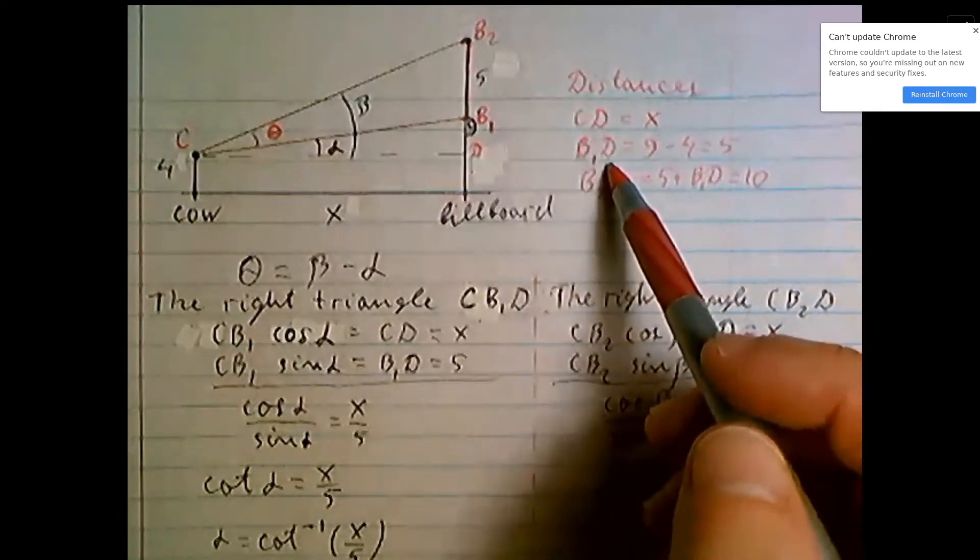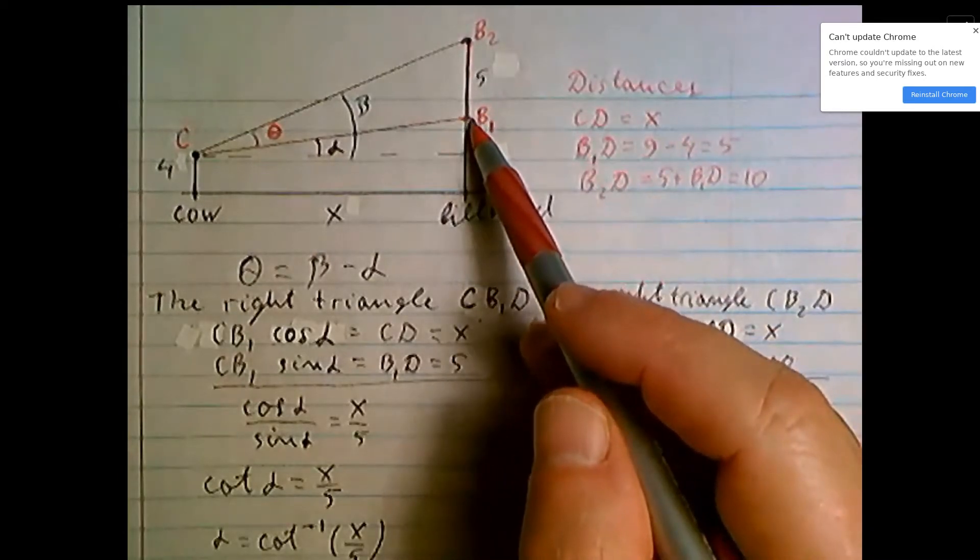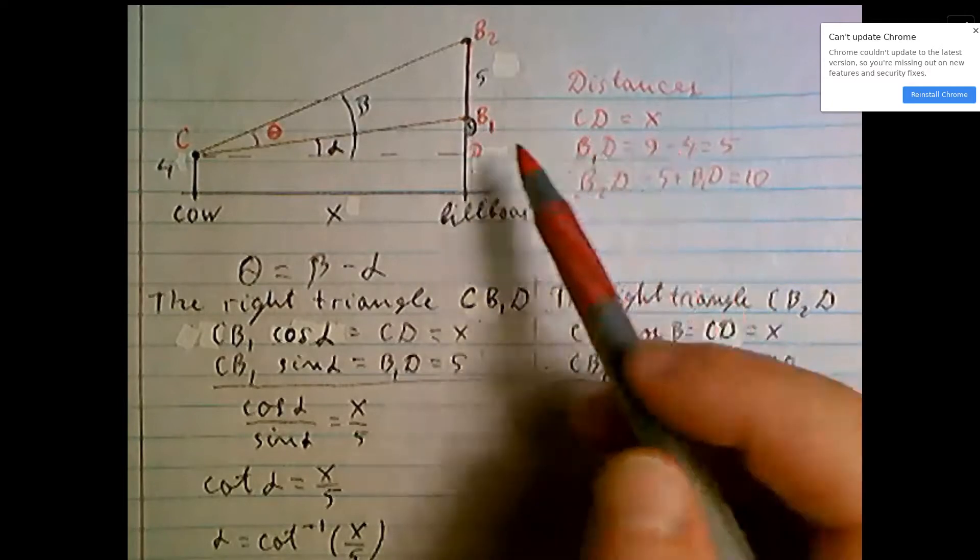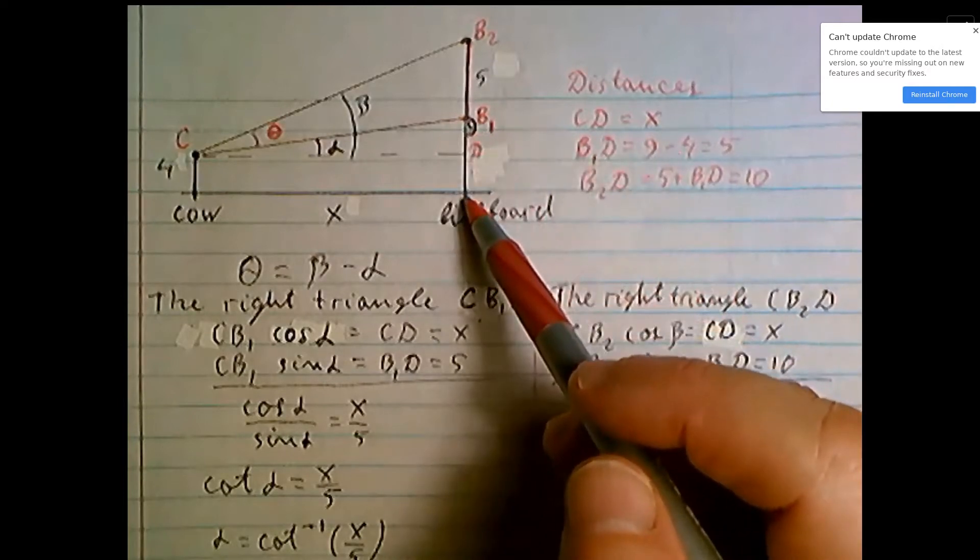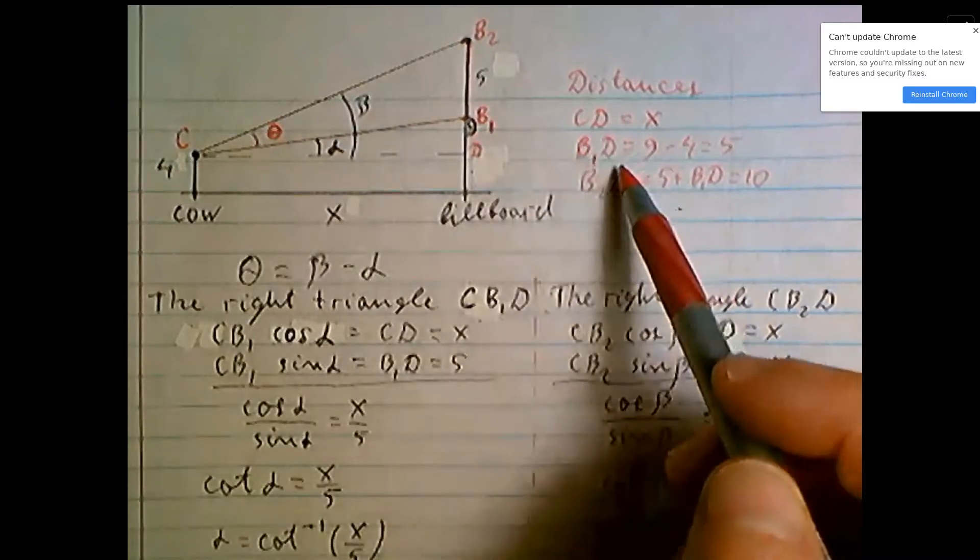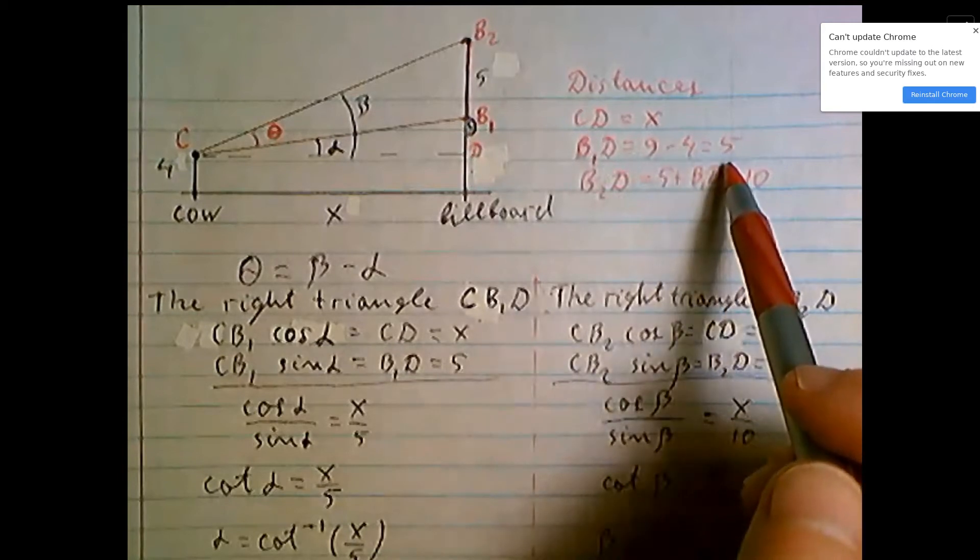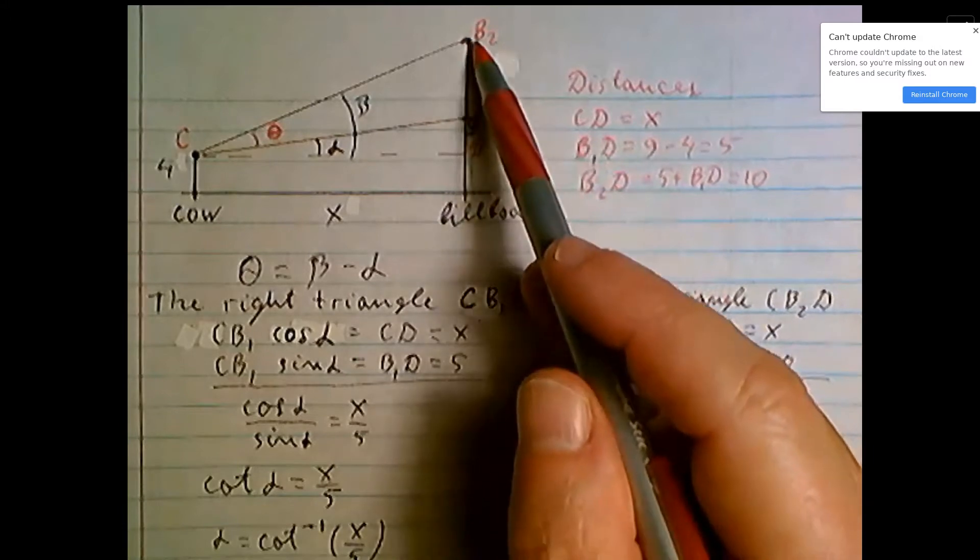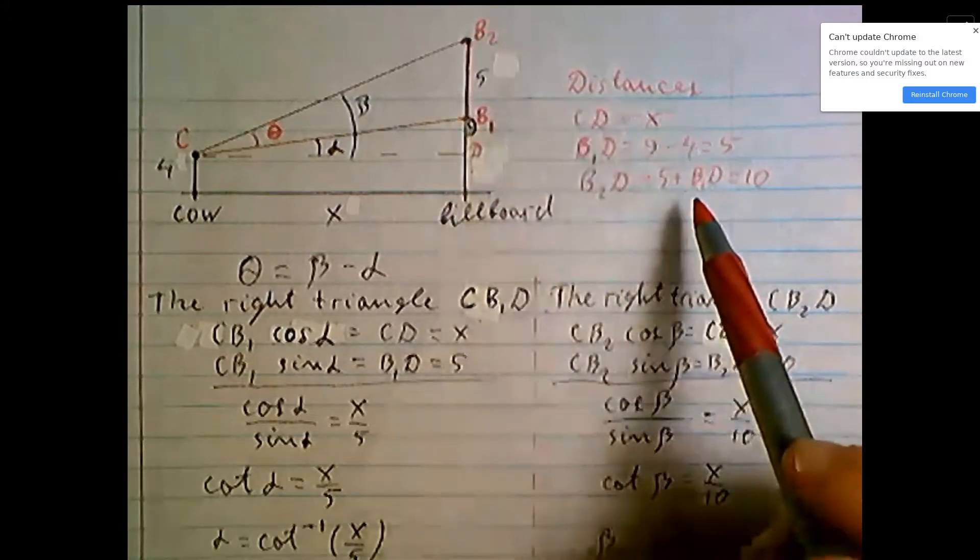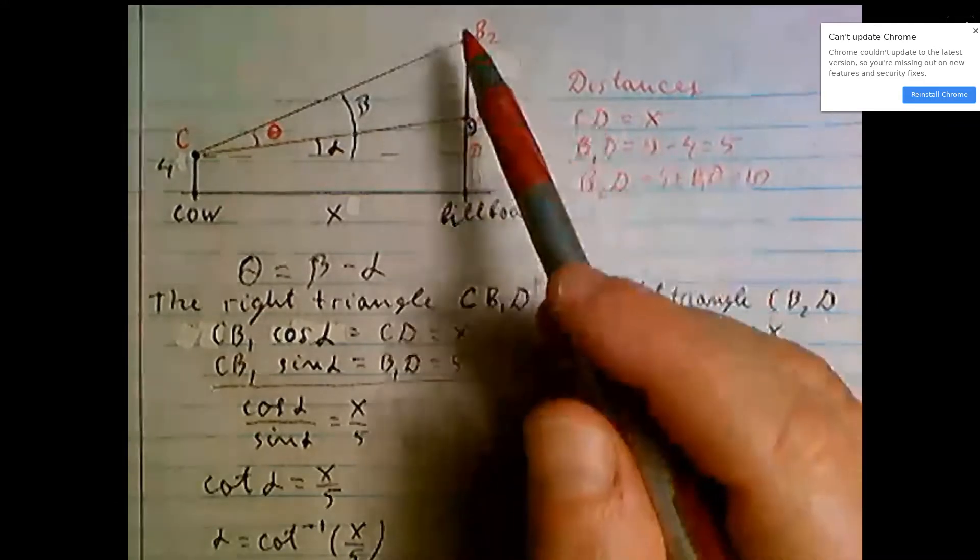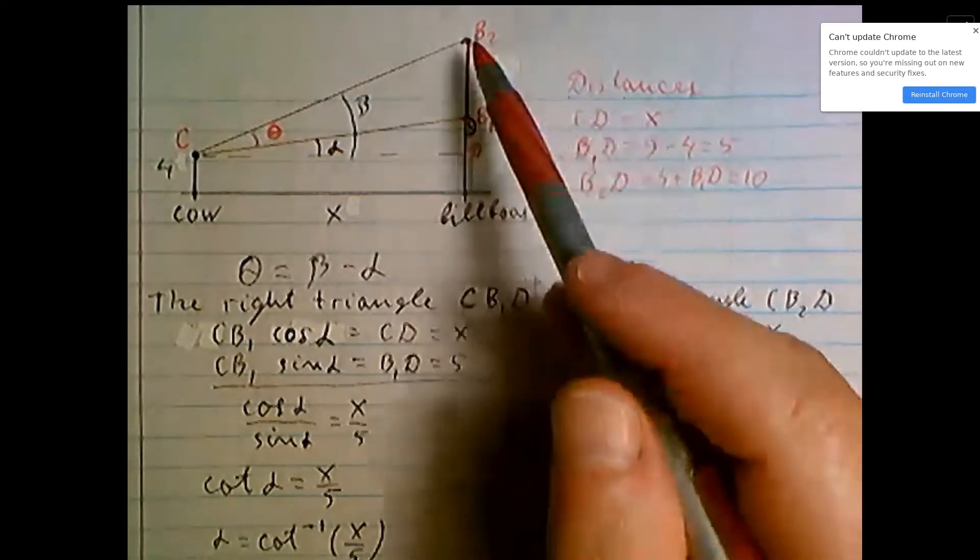What is this distance B1D? B1 is 9 feet above the ground, this distance is 4 feet above the ground, so B1D is 9 minus 4 equals 5. B2D: B2B1 is 5 plus B1D, 5 plus 5 equals 10. This distance is 10.